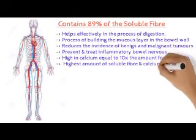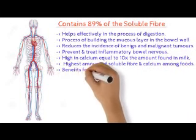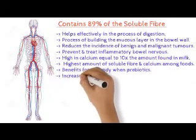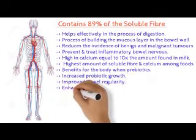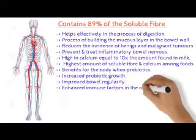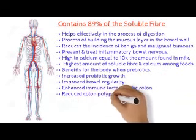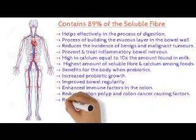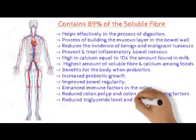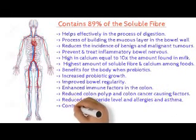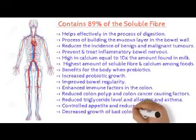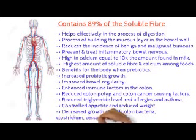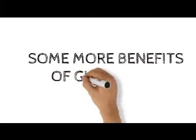When taken as prebiotics in adequate doses, gum arabic supports: increased growth of good protective colon bacteria — Bifidobacterium and Lactobacillus; improved bowel regularity with softer and more regular bowel movements; absorption of calcium and magnesium throughout the colon and stronger bone density; enhanced immune factors in the colon; and reduced colon polyp and cancer-causing factors, triglyceride levels, and allergies and asthma, especially in infants and children. It also helps with controlled appetite and reduced weight, and decreased growth of bad colon bacteria such as Clostridium, and cessation of offensive flatus smell.